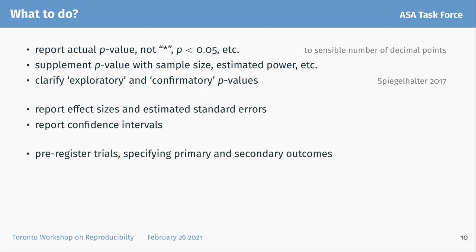In medical studies, it's now pretty common to pre-register trials and specify primary and secondary outcomes, and even to pre-specify the data analysis — which is more controversial. The New England Journal of Medicine requires this. There is a real trade-off between being too rigid in the analysis you set out to do and being not rigid enough.